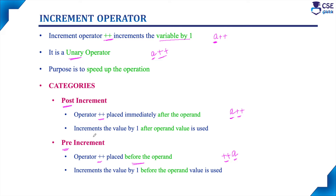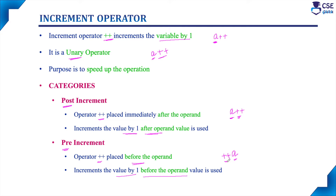In post-increment, it increments the value by one after the operand value is used. The operand value — what is the value of a — that value is used first and then it will get incremented. In pre-increment, it increments the value by one before the operand value is used. So here the value of a will get incremented by one and then its total value is used. But in post-increment, the actual value of a is used first and then it will get incremented. This is the main difference between post-increment and pre-increment.